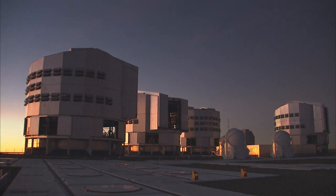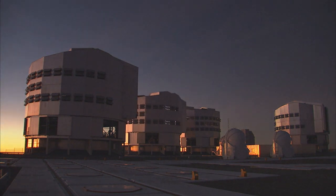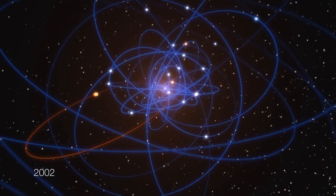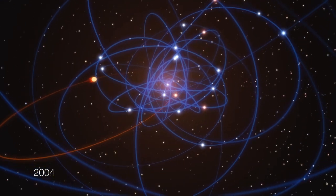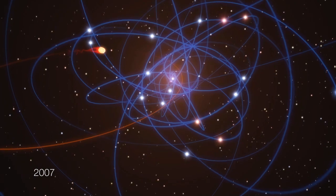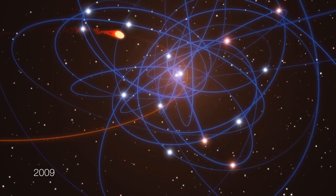Using ESO's Very Large Telescope, a team of astronomers has discovered a new object that is heading almost straight towards the black hole at vertiginous speed. The object is not a star, but a cloud of gas.